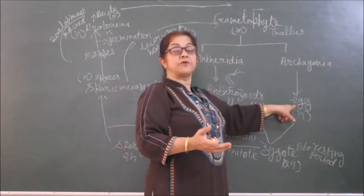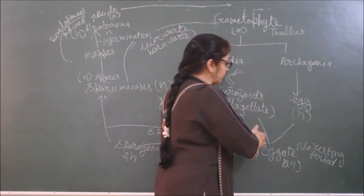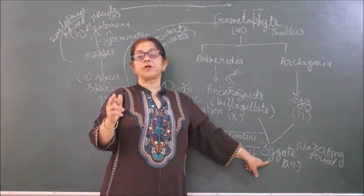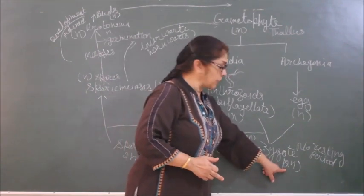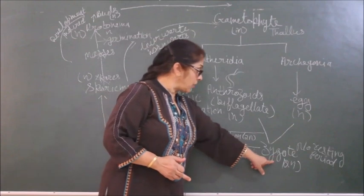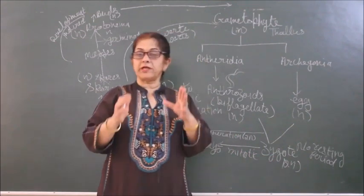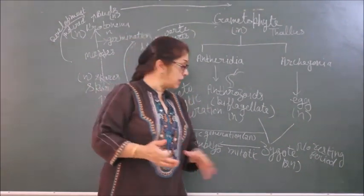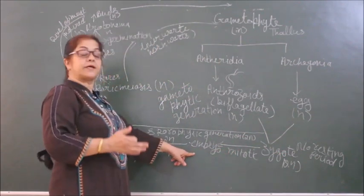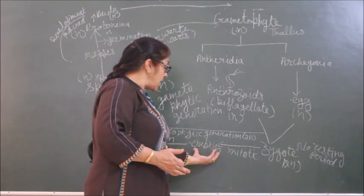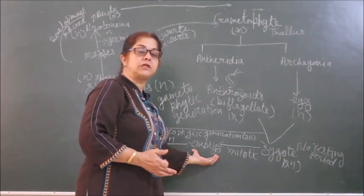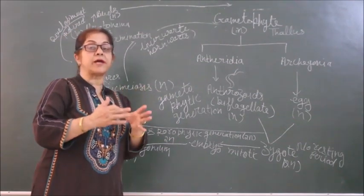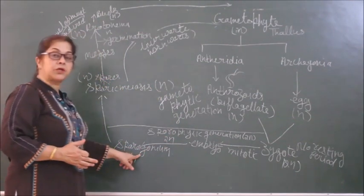Egg is acting as a female gamete. When anthrozoids swim in water medium and join with the egg, then zygote, which is the first cell of sporophytic generation, is formed. That is diploid. Now which generation starts? Diploid. Zygote will not take any resting period. There is no resting period and no immediate meiosis, no reductional division will occur. First of all, it will mitotically divide to form an unorganized mass of cells that is initially called embryo. And embryo again by differentiation and by various mitotic divisions is converted into sporogonium or capsule.